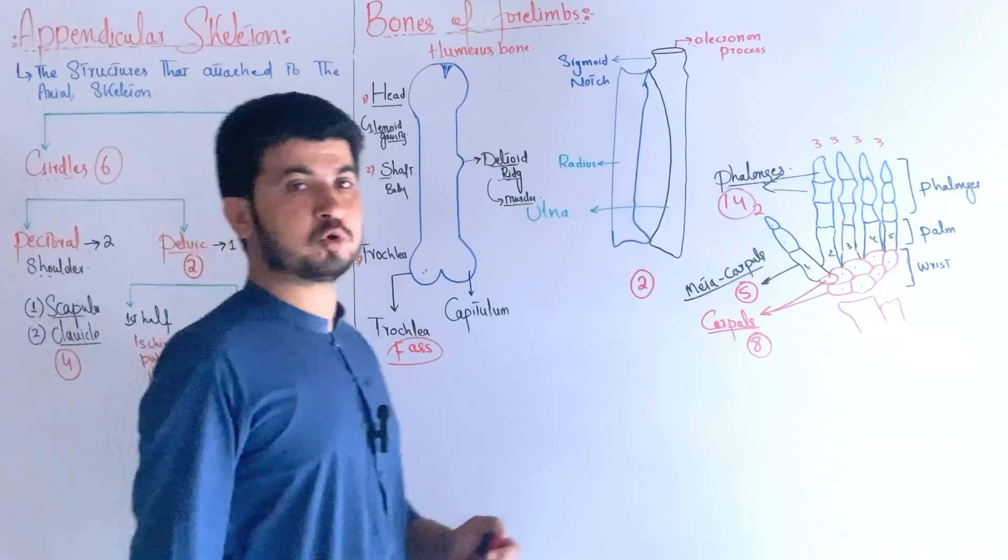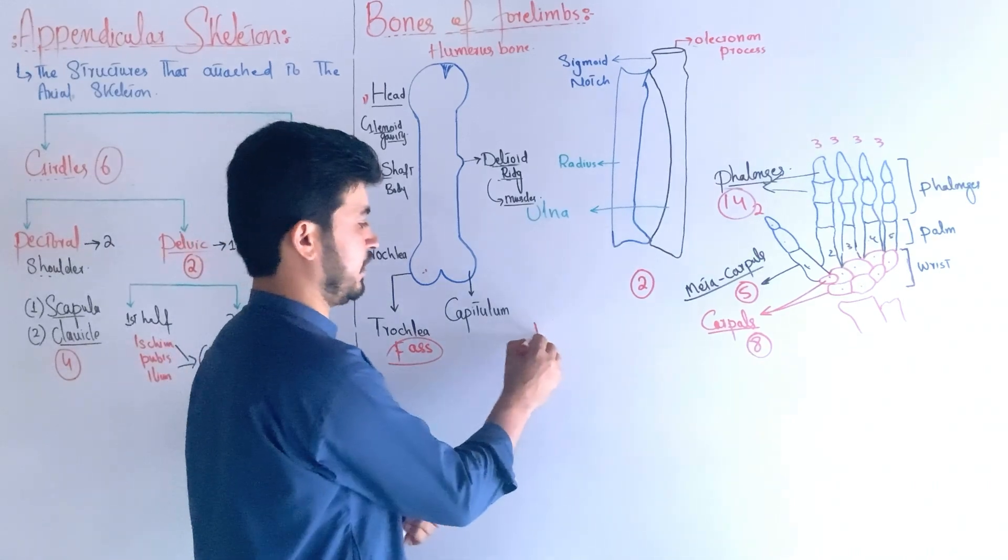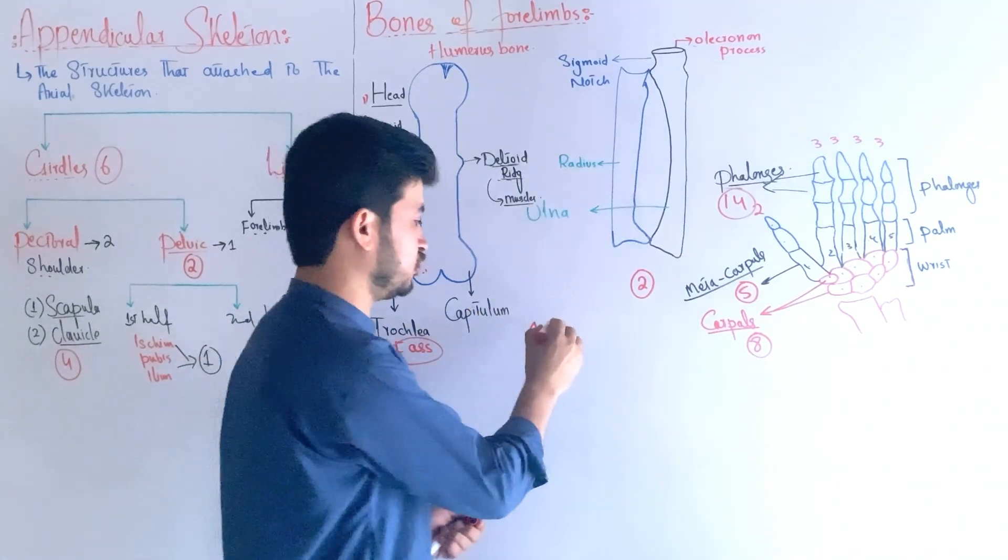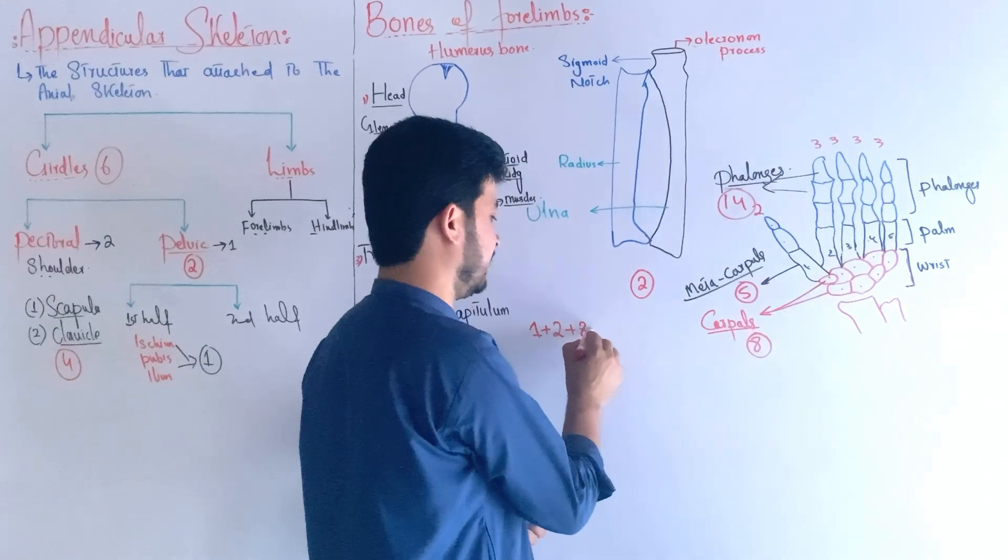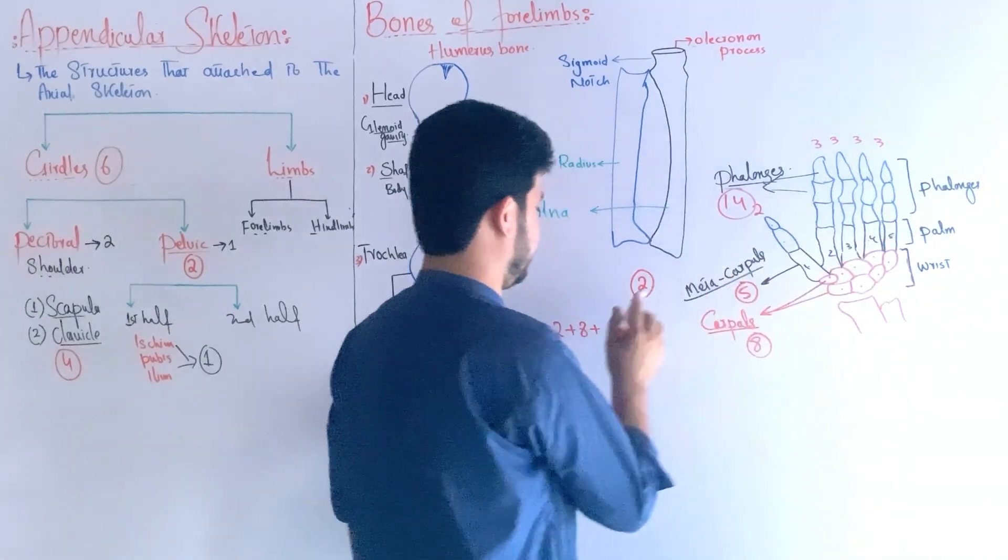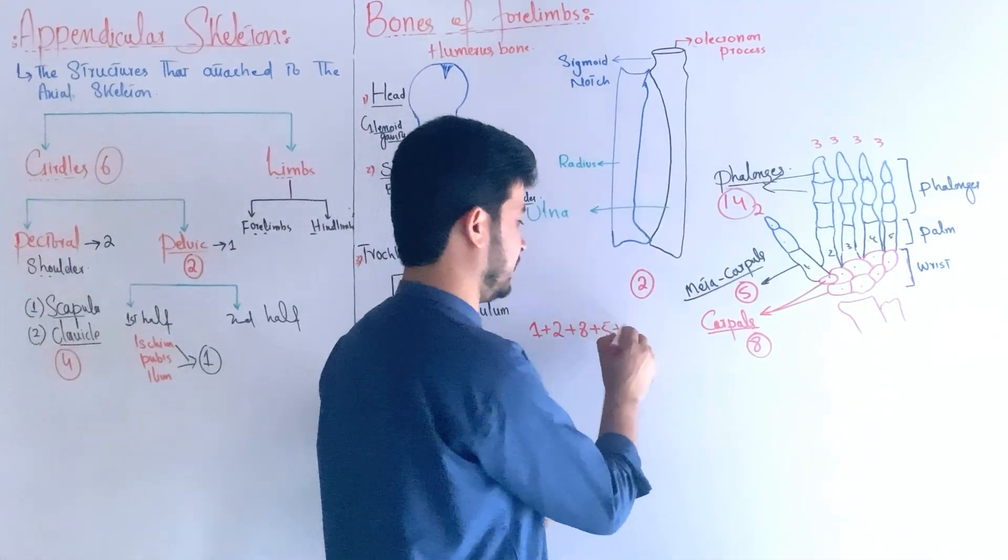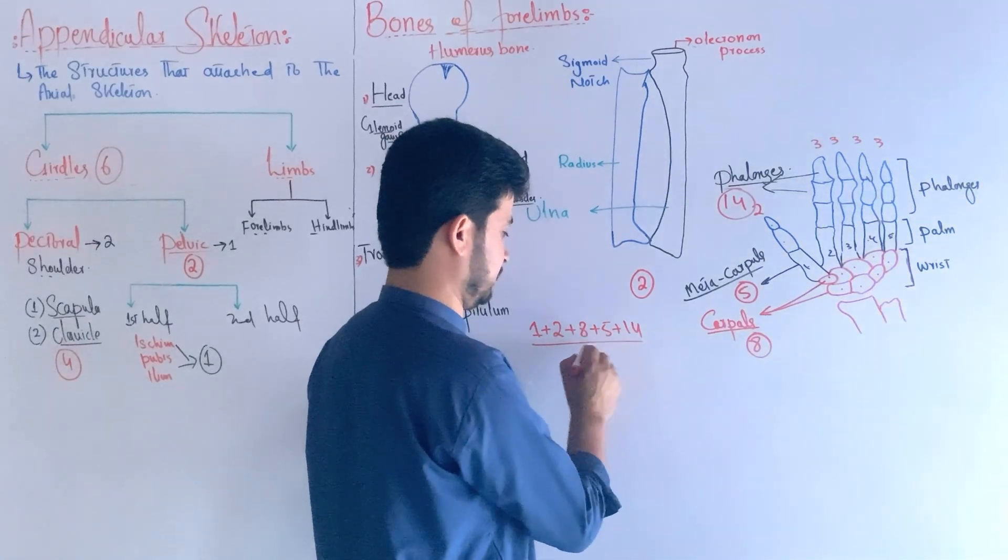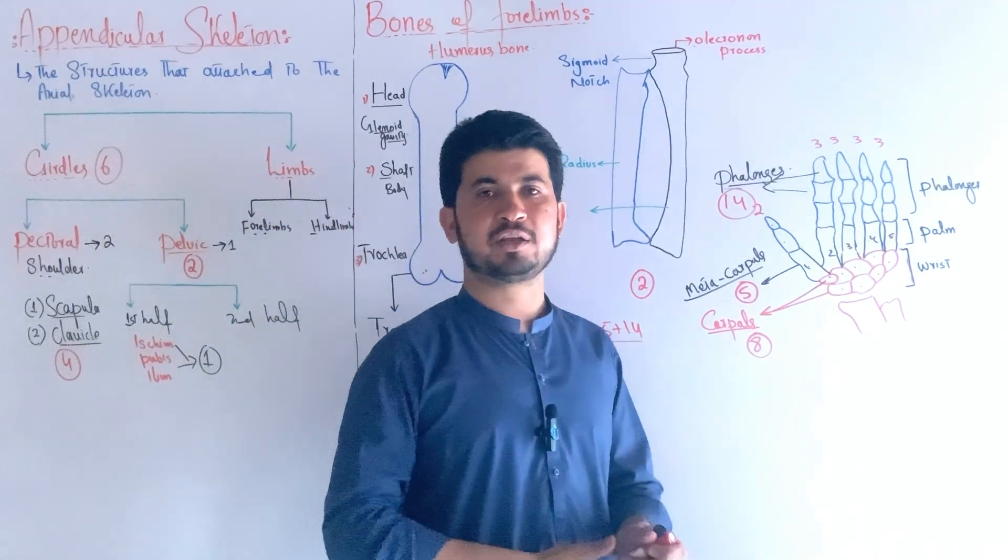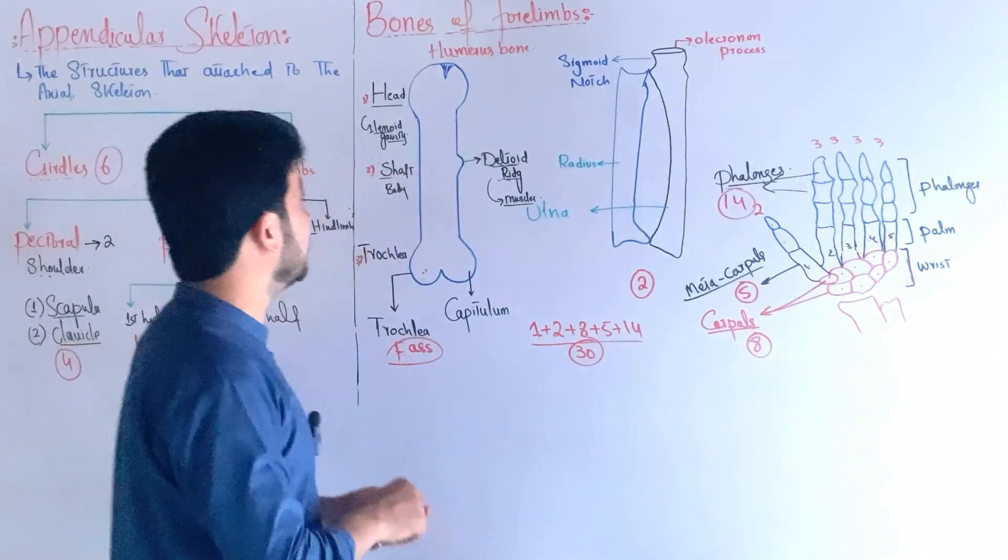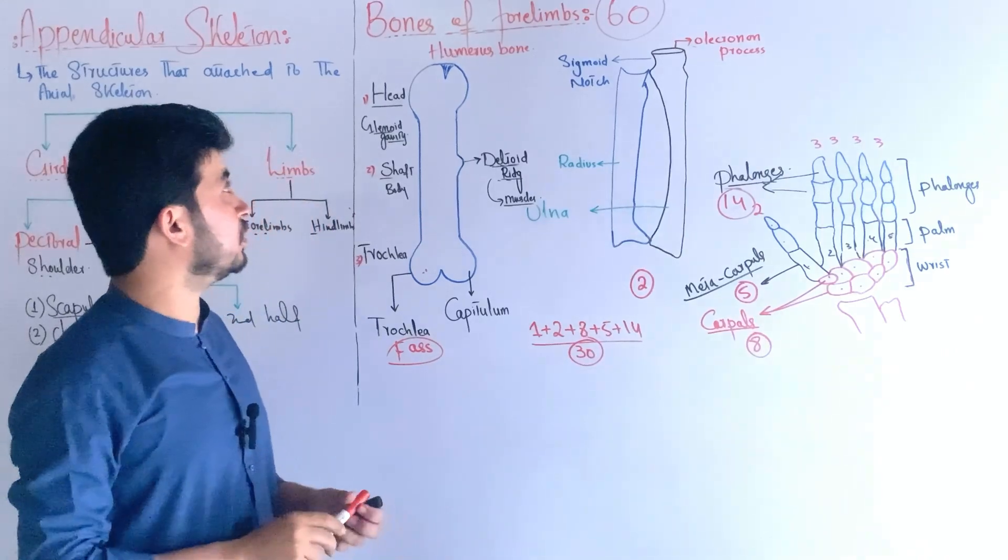In total, the forelimb has the humerus, radius, ulna, eight carpals, five metacarpals, and fourteen phalanges - making thirty bones in one forelimb. For both forelimbs, that's sixty bones total. The forelimbs have a total of sixty bones.